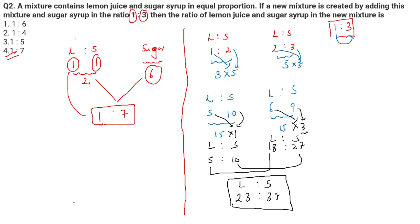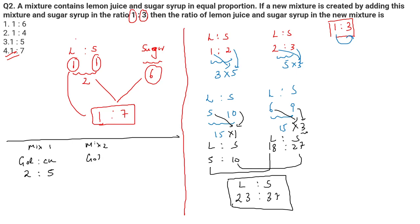Now I have a question for you: I have mixture one where gold to copper is in the ratio 2:5, and mixture two where gold to copper is in the ratio 7:3. I want to take mixture one and mixture two in the ratio 5:4. What will be the final ratio of gold to copper in the final mixture? Please give your answers in the comment section below. Thank you.